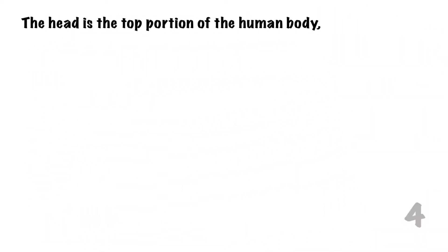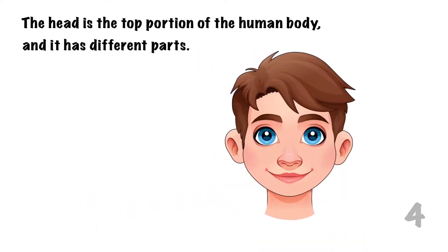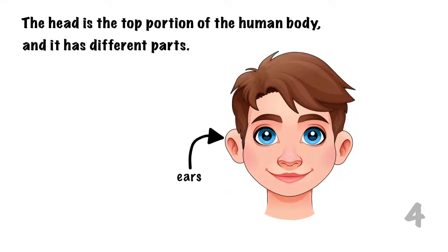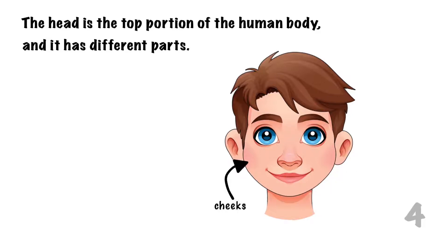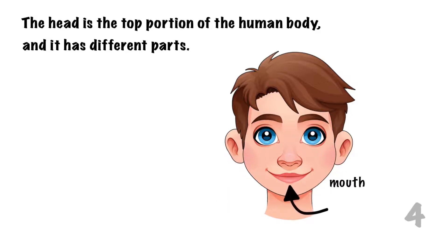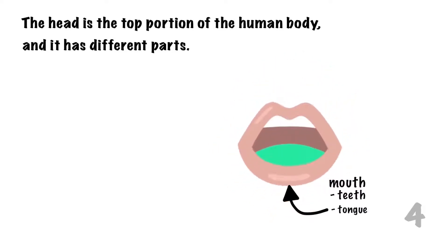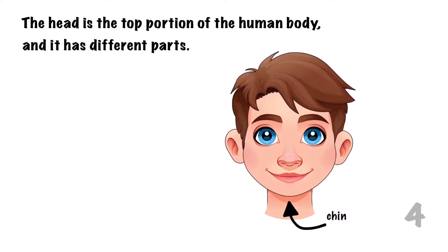The head is the top portion of the human body and it has different parts. These include the hair, forehead, eyebrows, eyes, ears, nose, cheeks, mouth, teeth, tongue, and the chin.